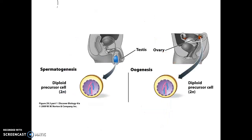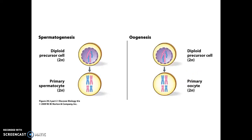So let's compare these two processes — oogenesis and spermatogenesis. Both of them occur in the gonads, and both start with diploid precursor cells. In both cases, those diploid precursor cells become fated to undergo the process of meiosis, and we call these the primary cells: the primary spermatocyte and the primary oocyte. The timing of when the primary cells are formed is different between males and females. In females, this happens before her birth, whereas for males, they do not start producing primary spermatocytes until they reach puberty.